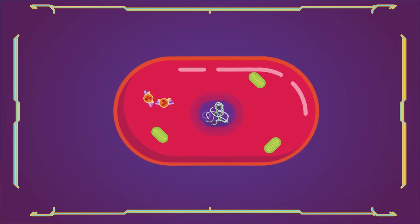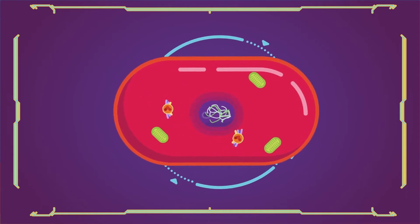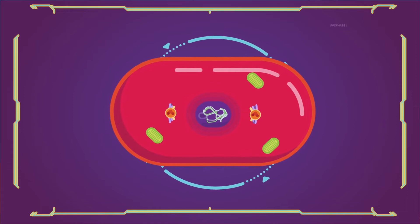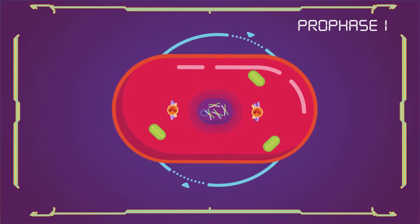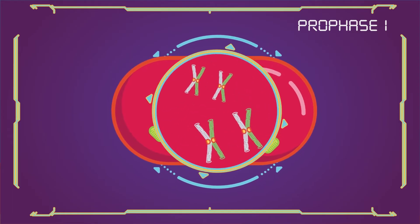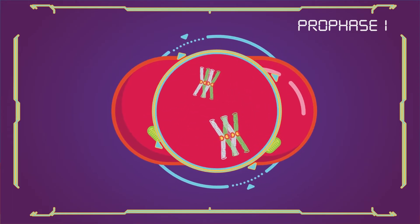In next step at meiosis 1, meiosis 1 takes place in following steps. Prophase 1. Prophase 1 is typically the longest phase of meiosis. During prophase 1, homologous chromosomes pair and exchange DNA.